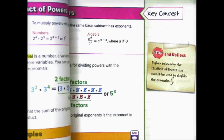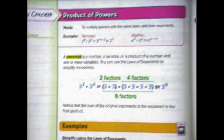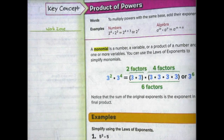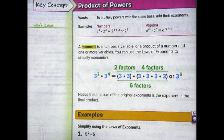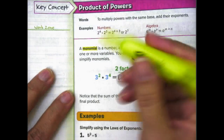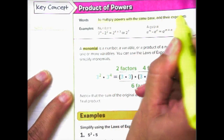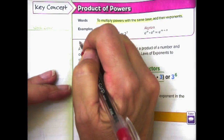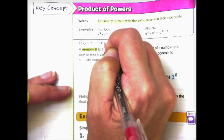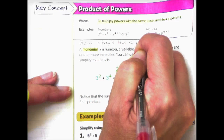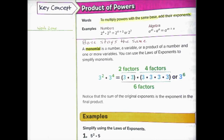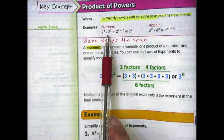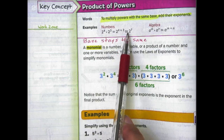Let's turn to page 24. The first thing we're going to do is start with the product of powers rule. The product of powers means that to multiply powers with the same base, we add their exponents. The base stays the same — we don't multiply their bases. We leave the base the same and add the exponents. For example, 2 to the 4th times 2 to the 3rd power equals 2 to the 4 plus 3, or 2 to the 7th.